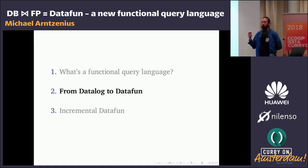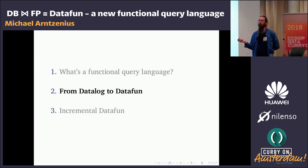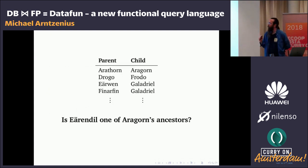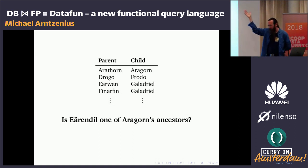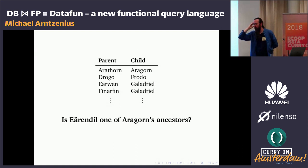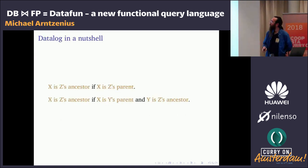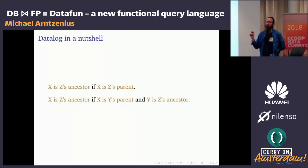Now for part two. All I've talked about so far is fairly ordinary queries, but DataFun is named after the language Datalog, and Datalog has a superpower. Here's an example problem you can't solve using just set comprehensions: given the parentage table, is Earendil one of Aragorn's ancestors — not just parent, grandparent, or great-grandparent, but any ancestor? To solve this, you need something deeper than set comprehensions. You need recursion.